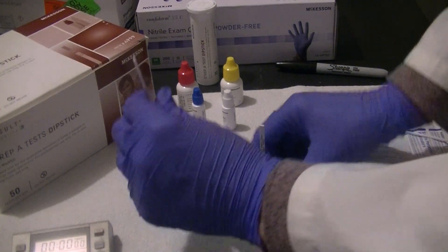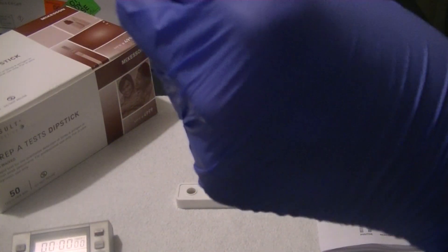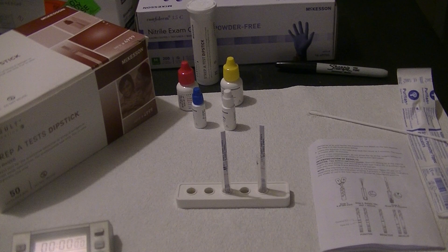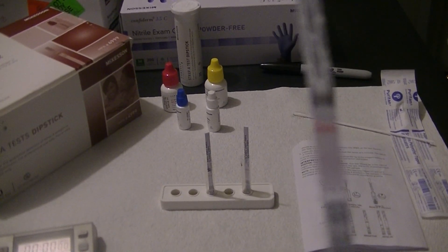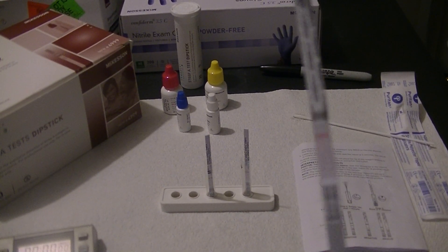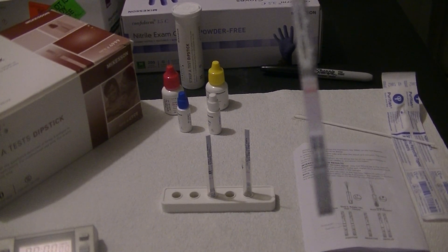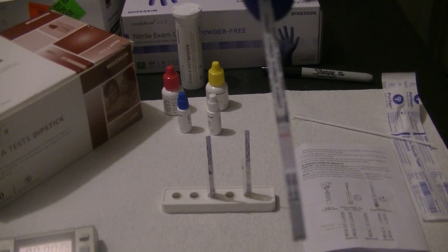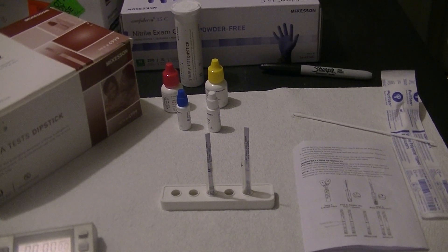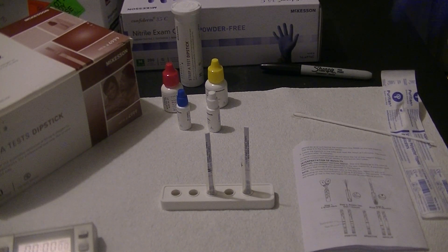After the five minutes, you can pull the strip out of the test. And for the positive control, you can see a control line, but you also see a faint positive test line. It is very faint, but it is there. So the positive control was positive.